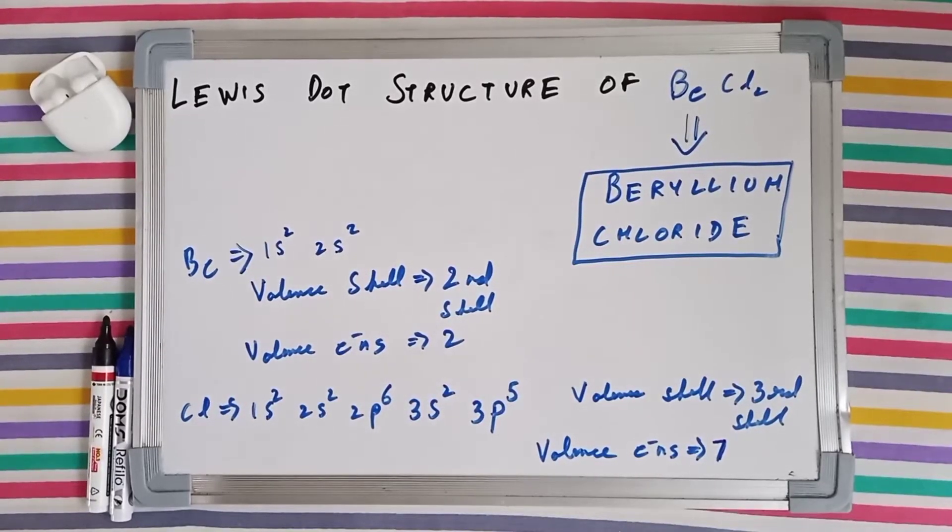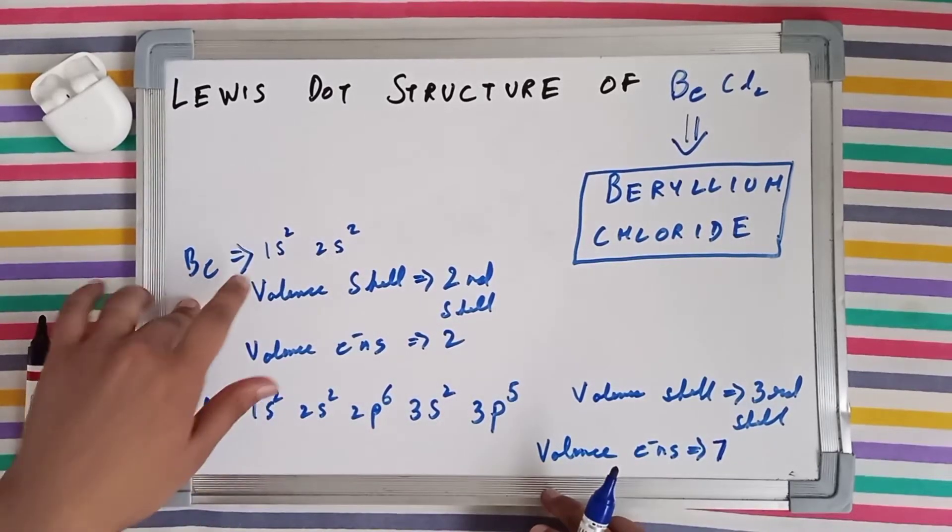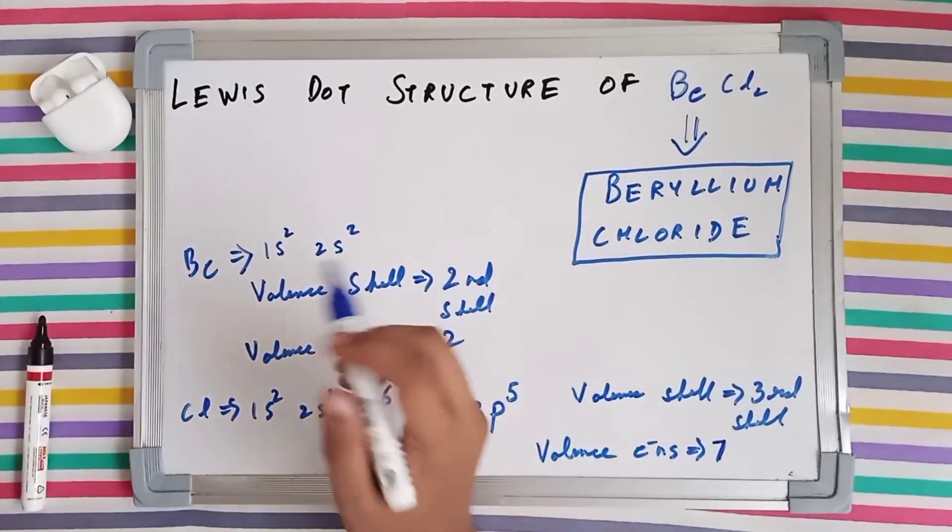We are going to find the Lewis dot structure of BeCl2, which is known as beryllium chloride. Now the valence shell for beryllium can be found out by writing its electronic configuration.